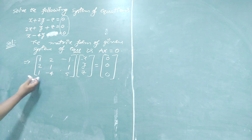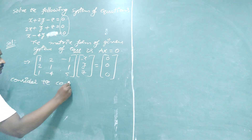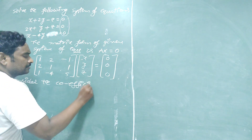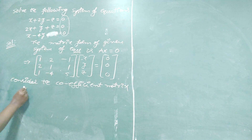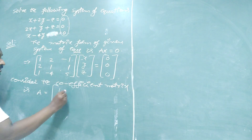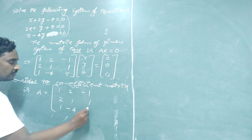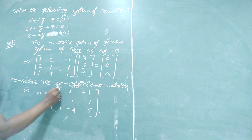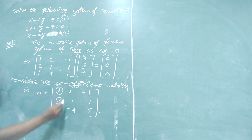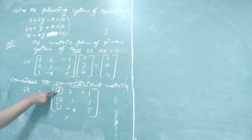Consider the coefficient matrix A equal to: first row 1, 2, minus 1; second row 2, 1, 1; third row 1, minus 4, 5. We have to reduce this matrix A into echelon form. Using the first element as pivot, we have to make the two elements below it equal to zero.